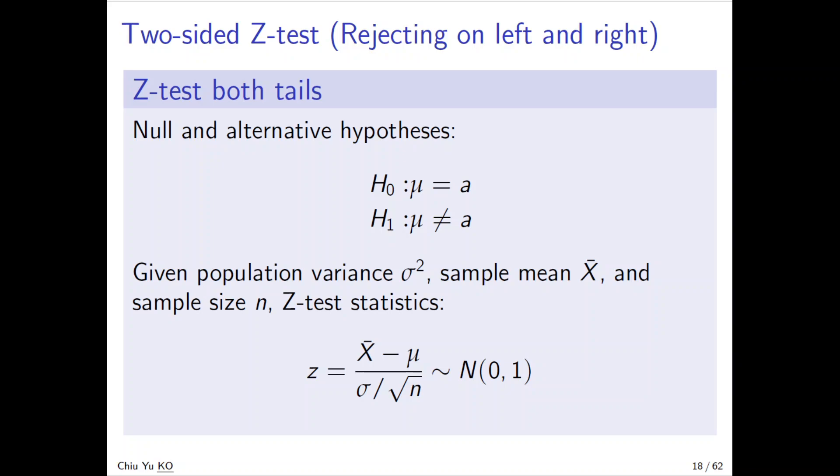The Z-test statistic is the same as the one-tail test. It's just by virtue of the central limit theorem.